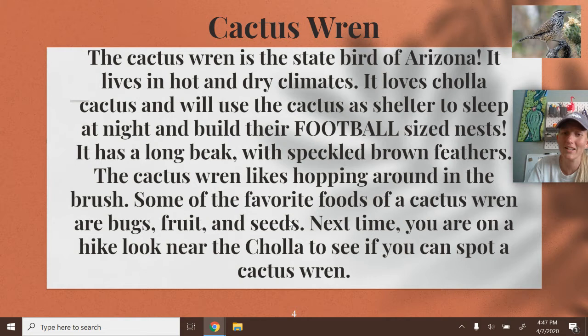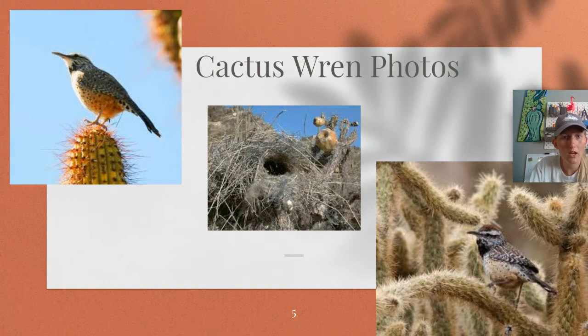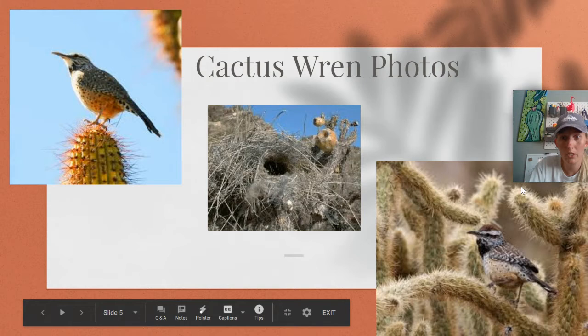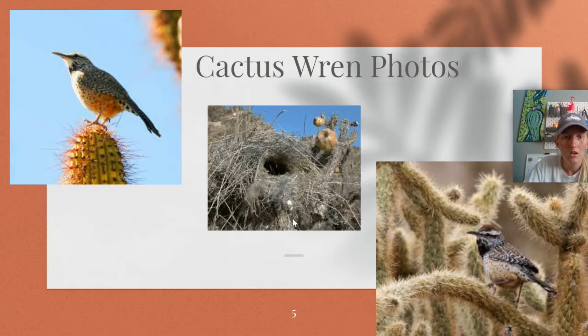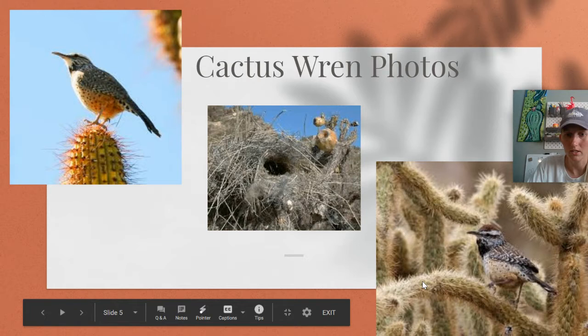Cactus wrens are pretty much anywhere near those Cholla cactus and you can see them jumping around on the ground searching for bugs, fruit, and different seeds that have dropped. They are more of a bold bird so you'll be able to look at them without them being too scared of you. Here's a picture of that Cholla cactus — it is the long branchy type cactus that has a ton of pricklies on it. Most Cholla cactus are going to have a bird's nest in them. Just be careful around it because those cactus branches easily drop off and you don't want to step on them or get yourself pricked.